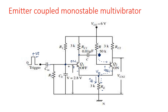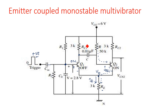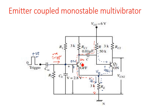When a positive going triggering pulse whose peak value is above the cut-in voltage of Q1 is applied, Q1 comes into on state. After the triggering pulse is applied, the current now takes a new path: from VCC through resistor R, then through capacitor C, through the on transistor Q1, and then through Re to ground. The current direction changes from the previous path.